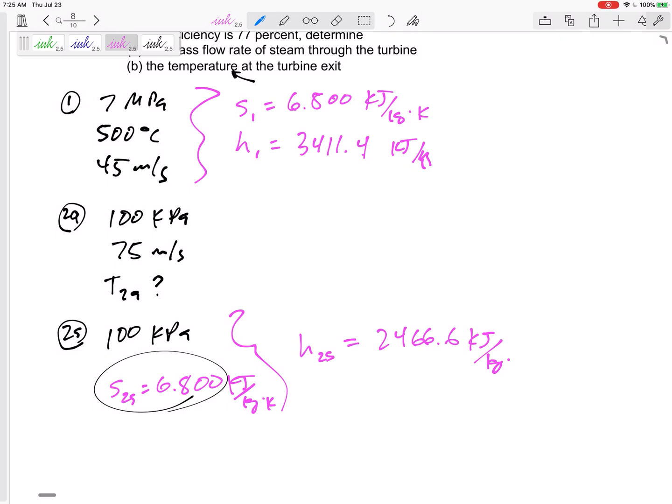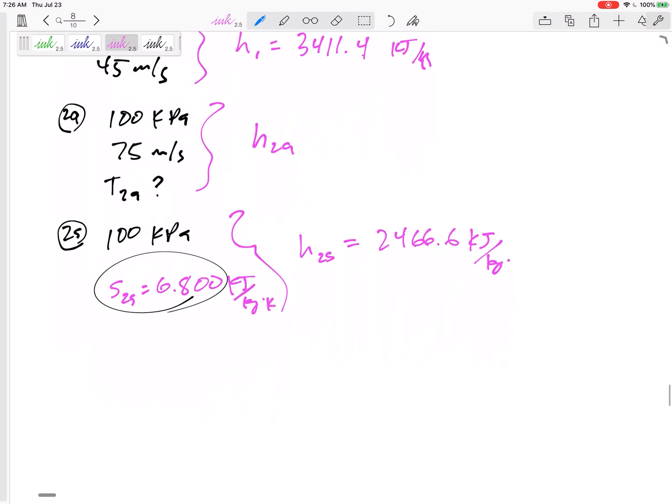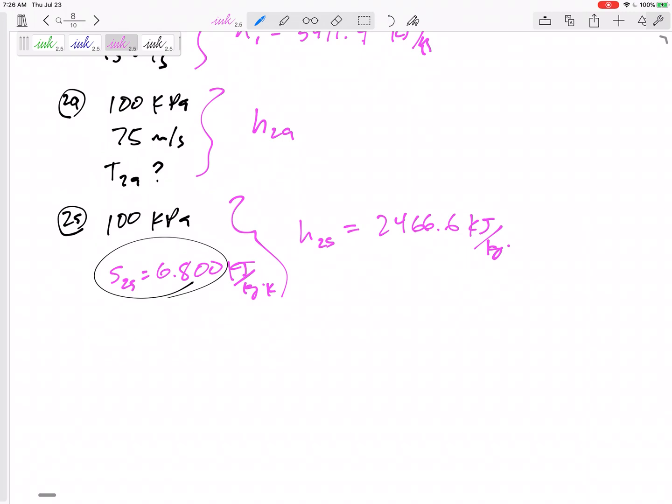Okay, velocity is not a property, so I really don't have two properties per se to find that h2 actual. But maybe I can use the isentropic efficiency in order to figure this out. I know you had a homework problem that had this; I really should talk about this better in the notes.